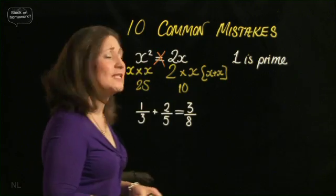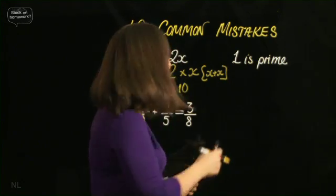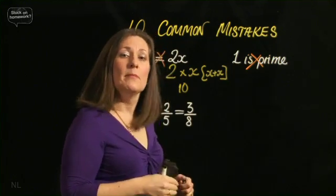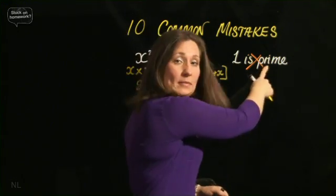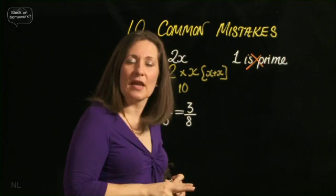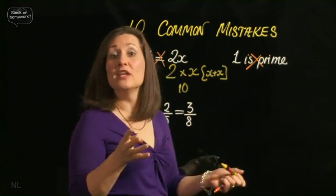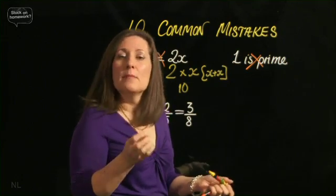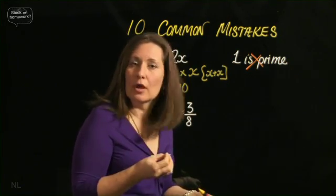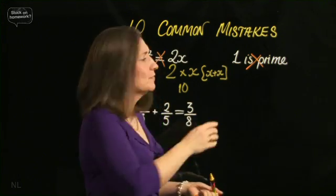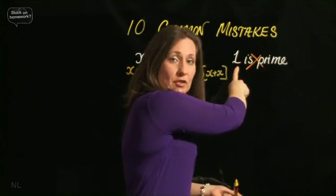The next one. 1 is prime. Again, no it's not. Very, very commonly said, but it's not. Why? Because the official definition of a prime number is a number that has 2 factors. Now 1 has 1 factor. 1 in itself. 1. But 5, for example, which is prime, has 2 factors. 1 and 5. Okay? So 1 is not prime.